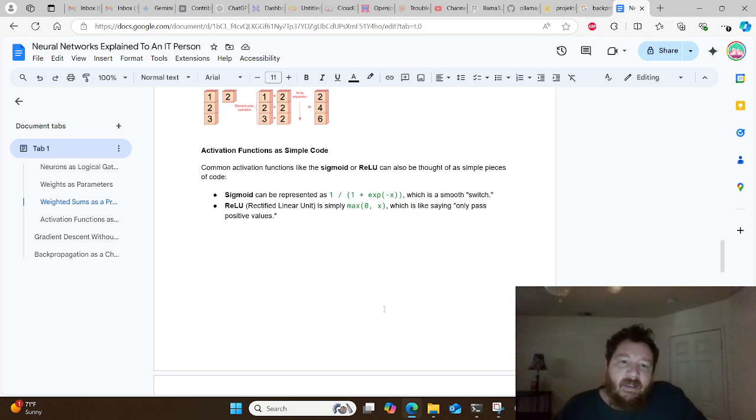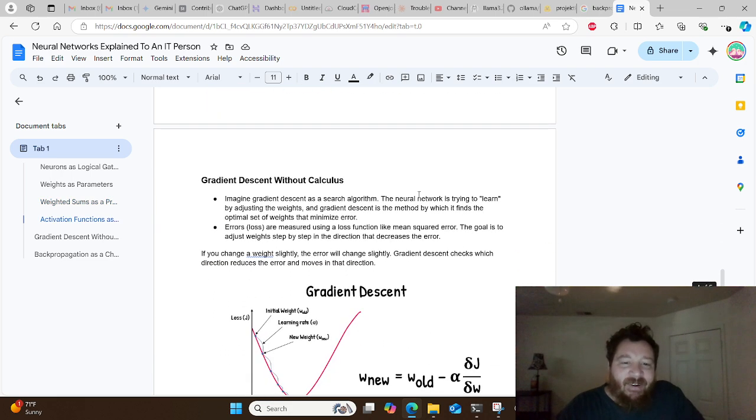So activation functions, looking at these as simple code, when you write them out and you utilize them within Python or anything that you're utilizing for a neural network, you literally write it out as code. And then you can look at them as doing different things. So you have, looking at two different activation functions, the sigmoid or the ReLU function. The ReLU function, you can write it out and think of it like as a straight switch, whereas the ReLU function is saying only pass when there's positive values. So these different functions have different logic behind them. They're different logical gates. So rather than just like a pure on-off logic, they have logic, period, any logic.